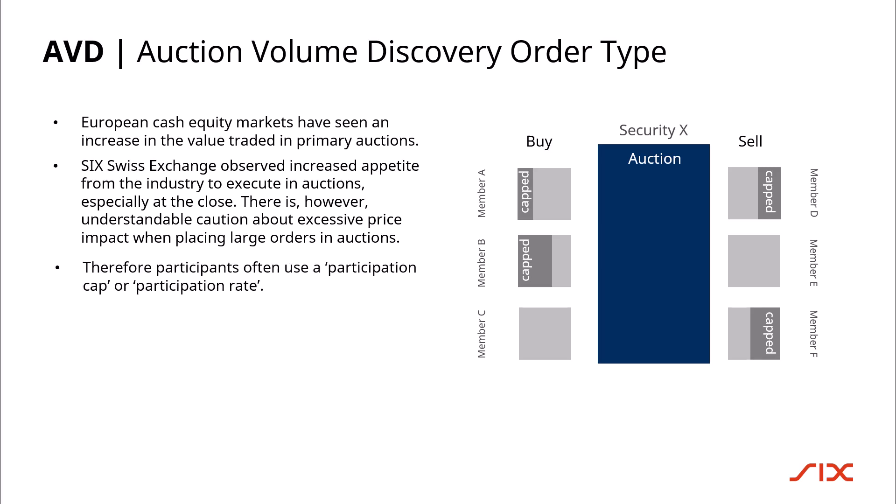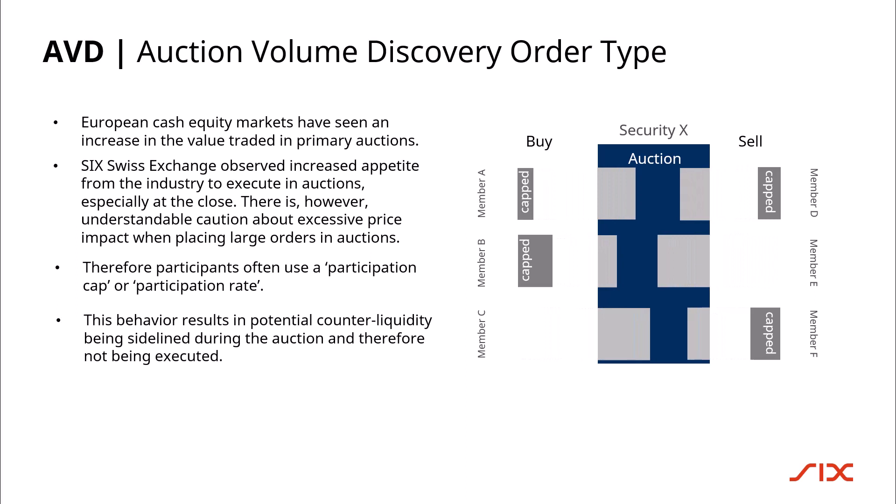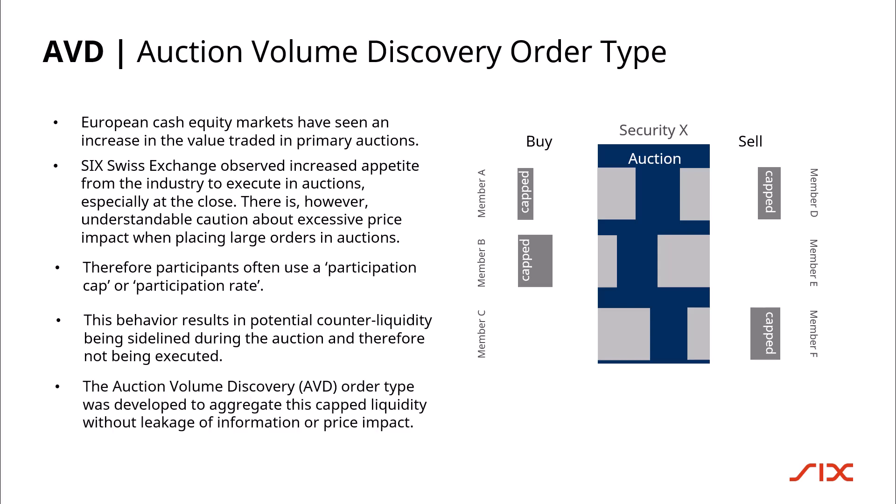Therefore, participants often use a participation cap or participation rate. This behavior results in potential counter liquidity being sidelined during the auction and therefore not being executed. The auction volume discovery order type was developed to aggregate this capped liquidity without leakage of information or any impact on the price.